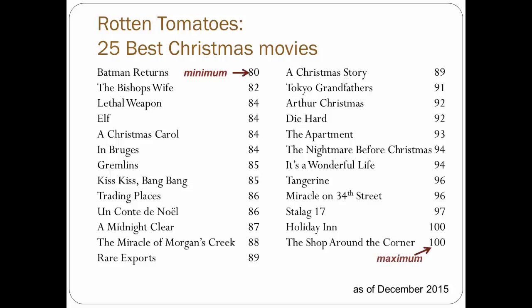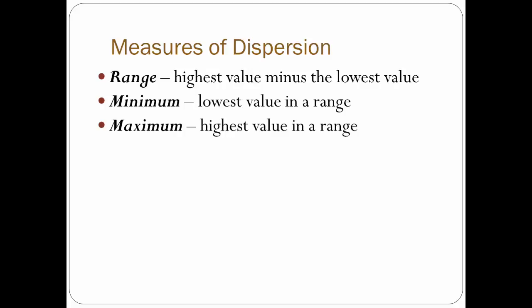Maximum, or the highest score in the dataset, is 100. And the range can be thought of in two different ways. First, as a quantity — the difference between the highest and lowest scores in a distribution. The range of scores is 20. Second, as an interval, with the lowest and highest scores as the range — so the range is 80 to 100. That covers the first three measures of dispersion.